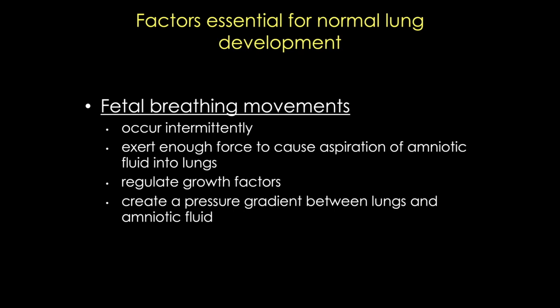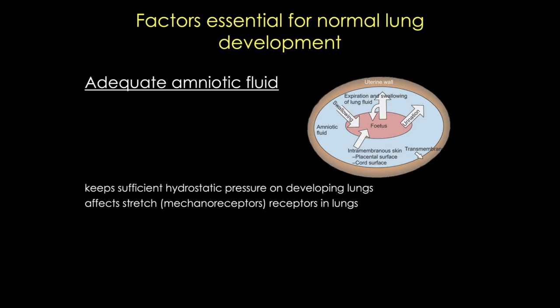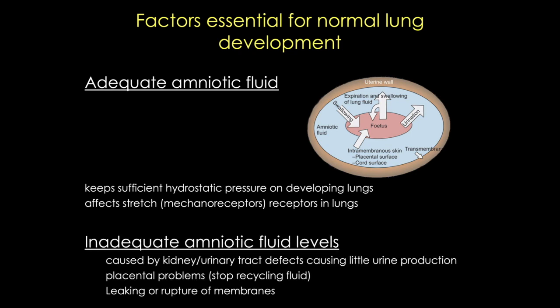At birth, our lungs are half filled with fluid from the lungs, from tracheal glands, and mostly from amniotic fluid. Amniotic fluid protects the fetus physically, protects it from infection, and protects the umbilical cord from compression. It serves as a major reservoir of fluid and nutrients coming from the mother, and provides fluid, space, and growth factors for normal development and normal growth of fetal organs, including the lungs. During late gestation, amniotic fluid is largely produced by fetal urine and lung secretions. Inadequate amniotic fluid levels are largely caused by defects in kidney and urinary development affecting urine output, but can also be caused by defects in swallowing — for example, esophageal atresia or tracheal agenesis. Poorly controlled maternal diabetes and placental problems or leaking membranes can also alter amniotic fluid levels.